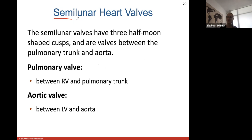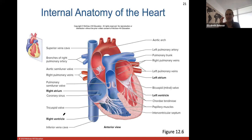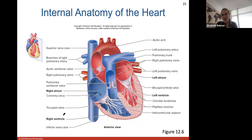We have two AV valves between the atria and ventricles, and then two semilunar valves. Semilunar valves have three half-moon shaped cusps - that's where the name comes from. They are valves between the pulmonary trunk and aorta and the ventricles. They open when the ventricles contract and pump blood, so blood flows through these valves into the pulmonary trunk or the aorta. The pulmonary valve opens from the right ventricle into the pulmonary trunk, and the aortic valve opens from the left ventricle into the aorta.